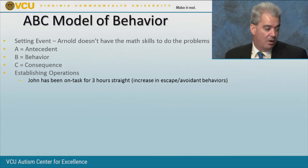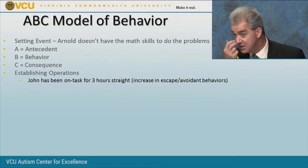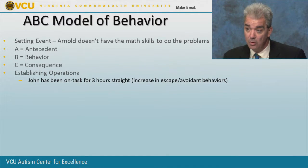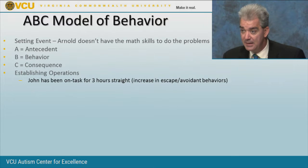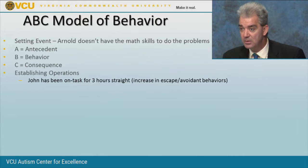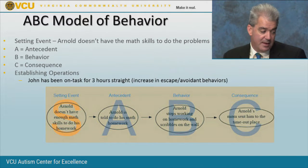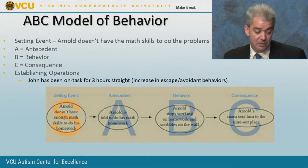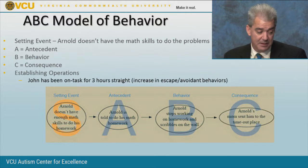In the ABC model with motivating operations: Arnold has been working on tasks for three straight hours, which increases his escape and avoidance behaviors. That establishing operation is going to trigger more escape-maintained behavior. Arnold doesn't have the math skills — that's the setting event. He's asked to do his math homework, the setting event increases the likelihood of scribbling on the wall, and getting sent to timeout reinforces the future likelihood of that behavior because he got what he wanted: escape. 'I've been working too long. Send me to my room. I don't care.'